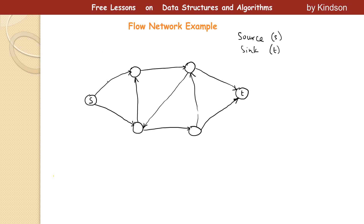So now you already know these are the nodes or vertices of the graph. You can say V is equal to {S, A, B, C, D, T} — you can make that up as homework. Also make up the edge set. The first edge is (S, A); you can fill in the remaining ones.